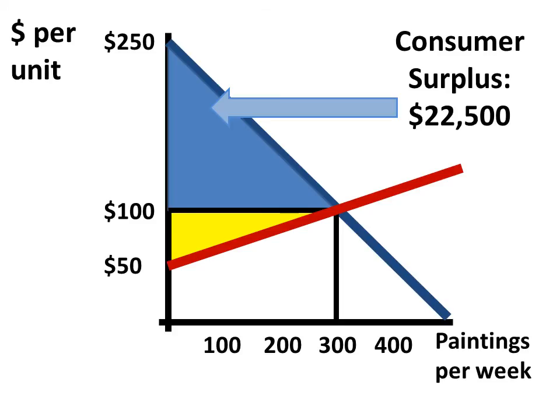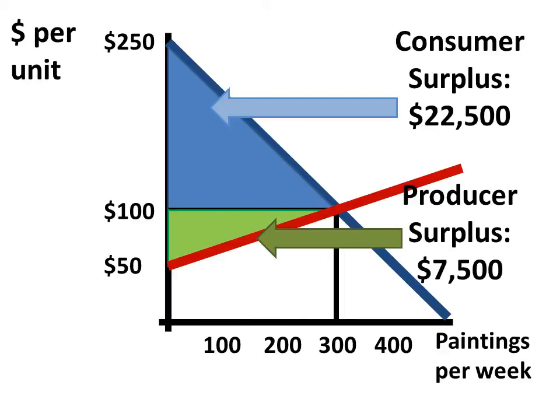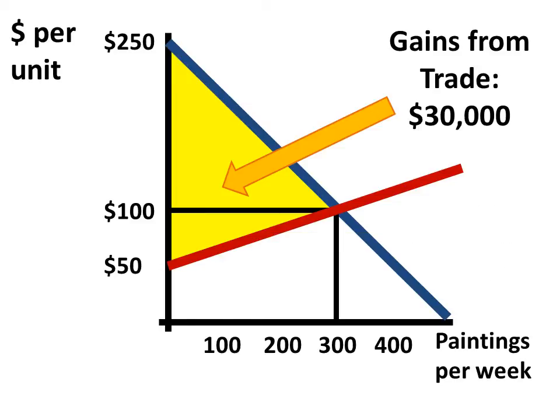Now, we can also do our consumer surplus and our producer surplus on the same graph, and we can see if we add these up, we get the $30,000 in gains from trade.